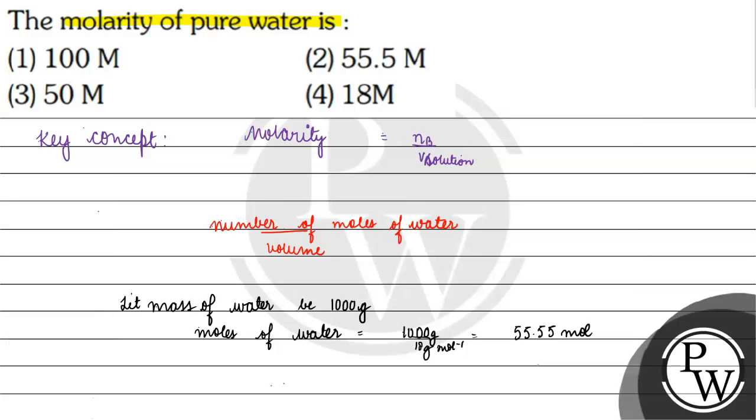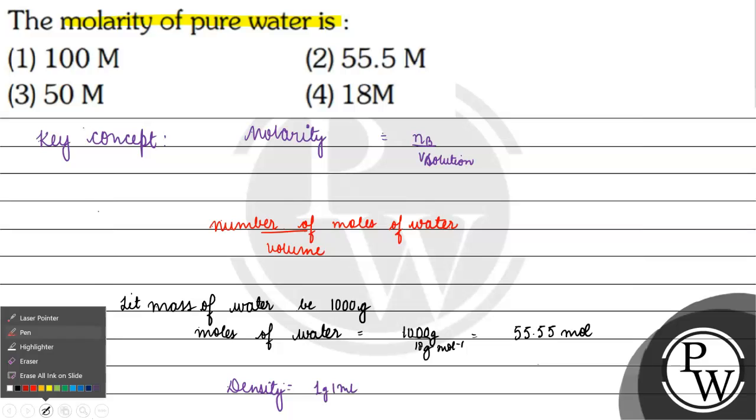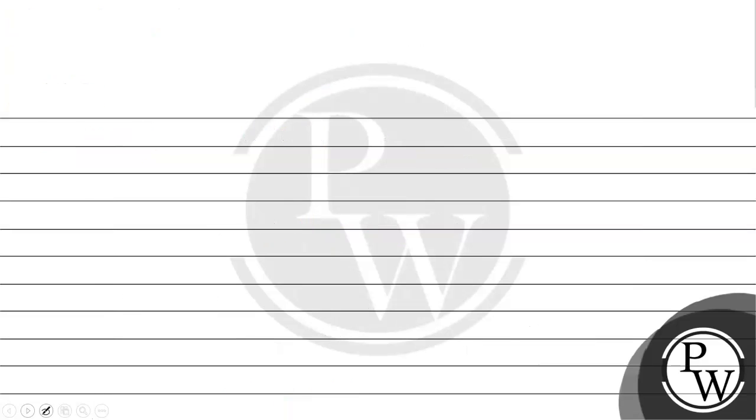Now, for density, density is 1 gram per milliliter. Mass of water divided by volume of water equals 1 gram per milliliter, which is the density of water.